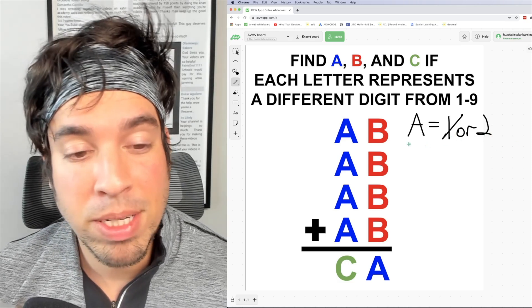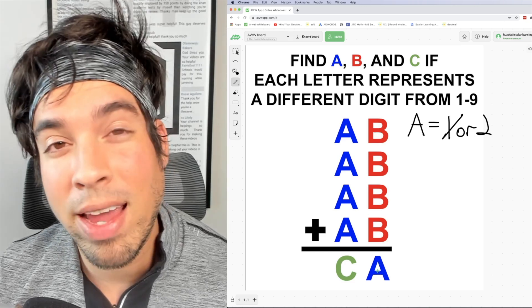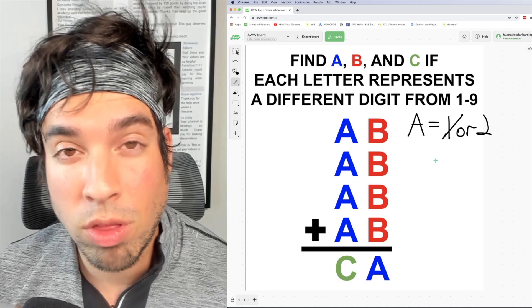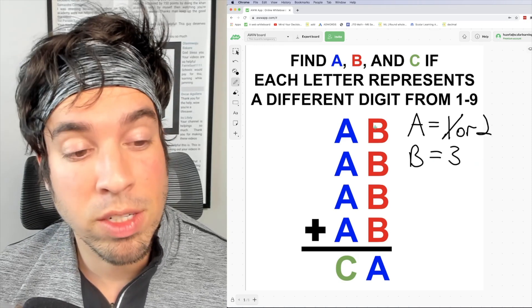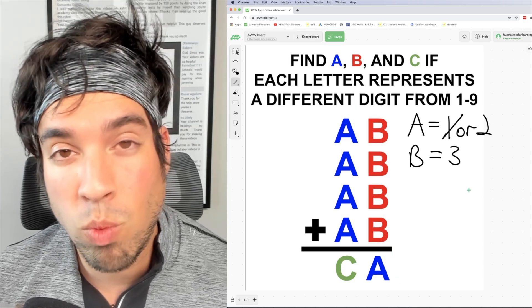Now that we know that a has to be two we can figure out what b has to be. And again four b's have to now end in a two. The only number where this works is when b equals three. The reason why three works is because three plus three plus three plus three is 12, so that gives us a two and a carry of one.